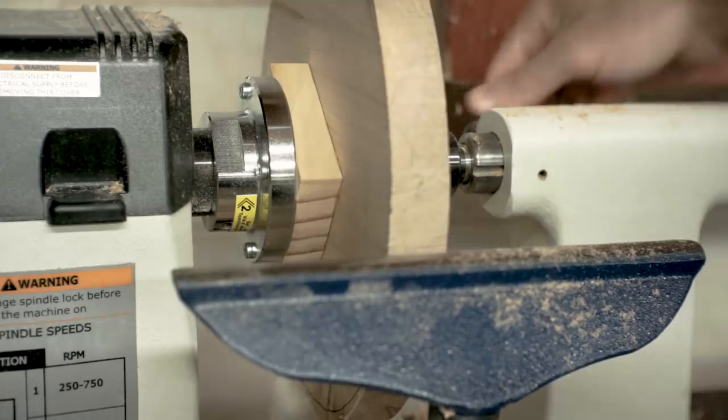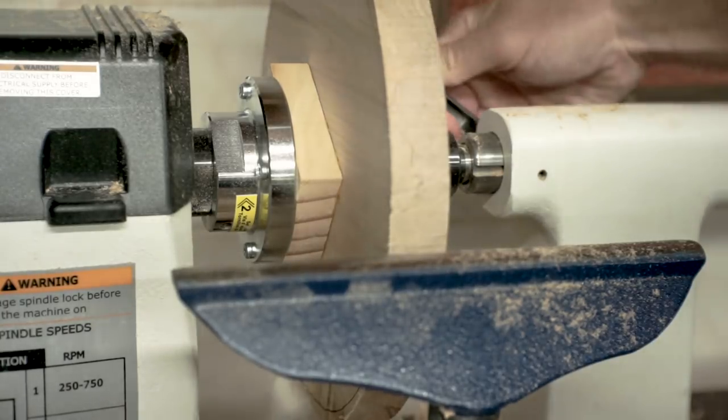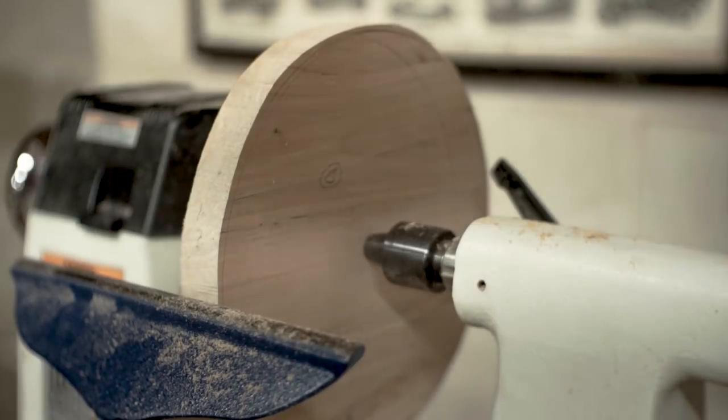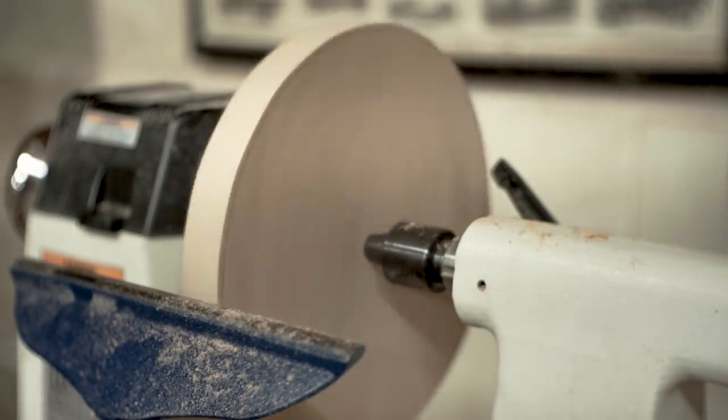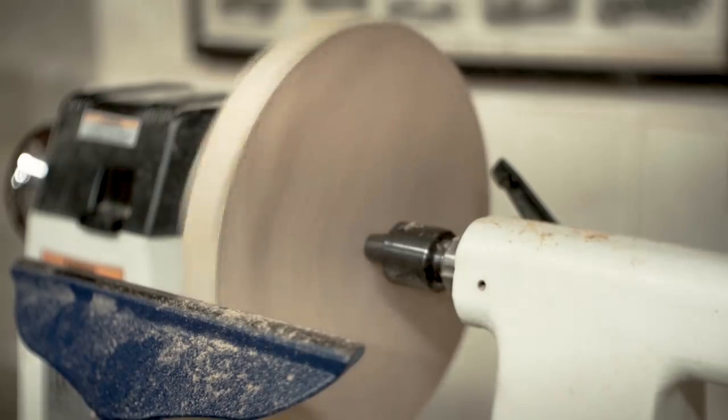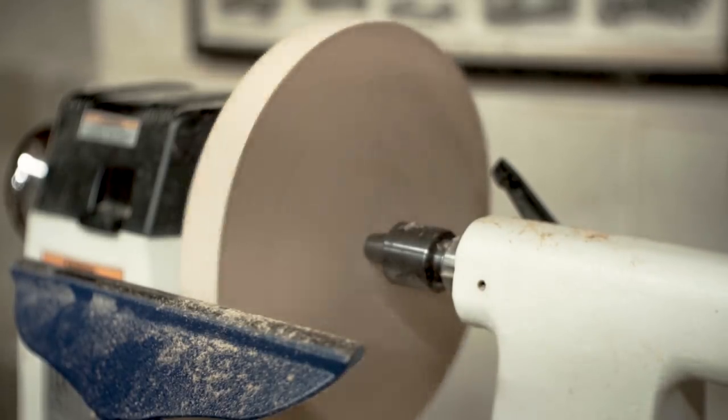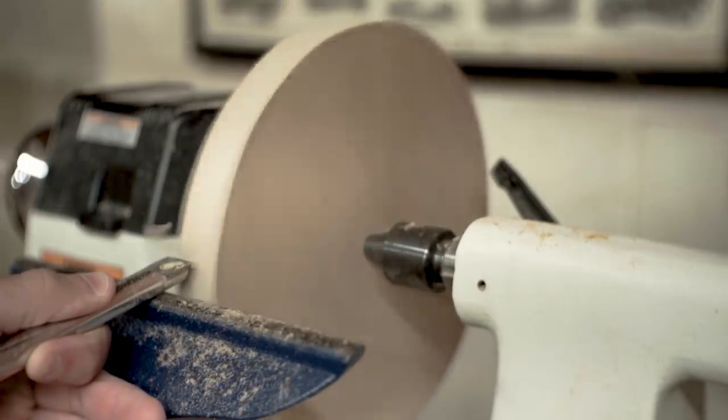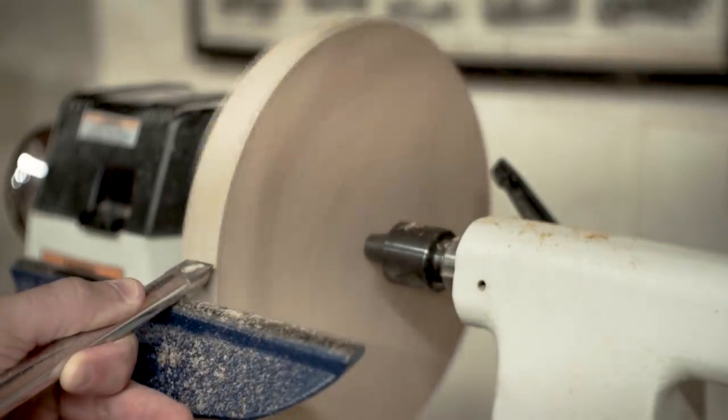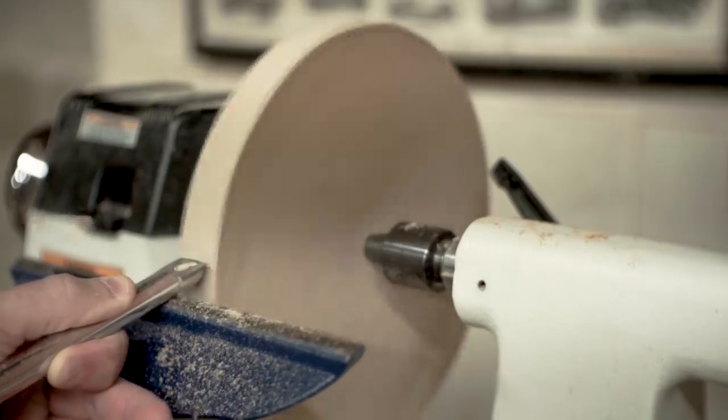It really helped to have the carbide turning tools to cut the end grain of the disc when it's going around. Most likely my other tools just weren't sharp enough, but the carbide worked the best to get just about the smoothest finish that I was able to get. So it worked out good.